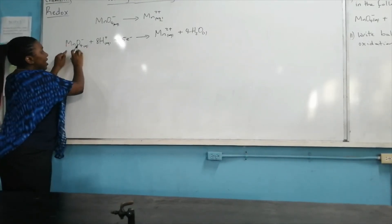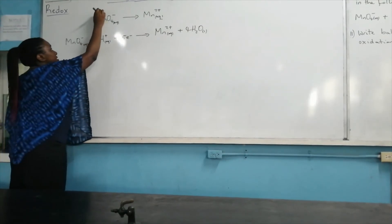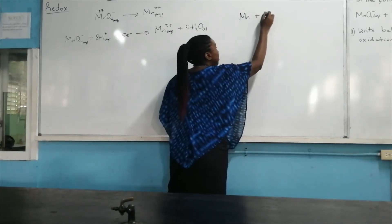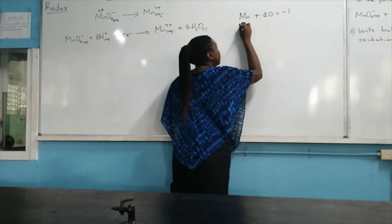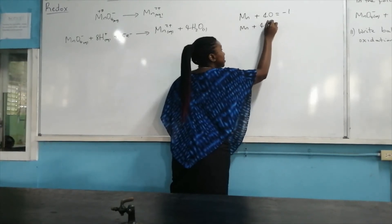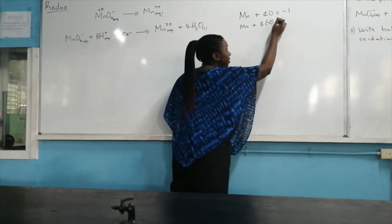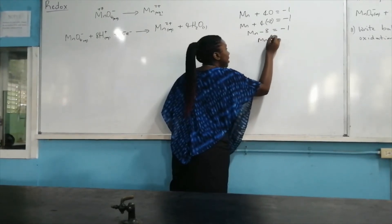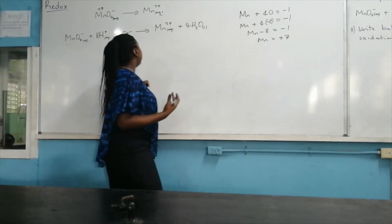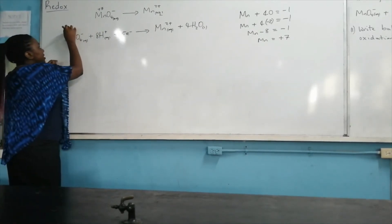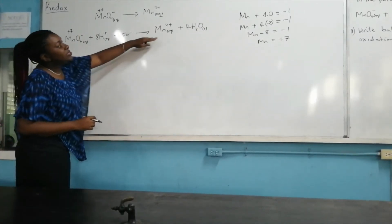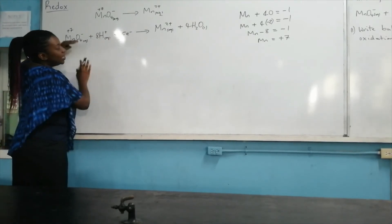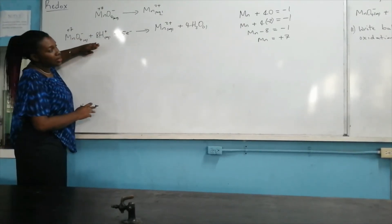The manganese in MnO₄⁻ is in the plus seven oxidation state. Working it out: Mn plus four oxygens (each negative two) equals negative one overall, so Mn minus eight equals negative one, meaning Mn equals plus seven. To change from the plus seven oxidation state to the plus two oxidation state, I need to add five electrons on the left-hand side of the equation. This represents a reduction process.